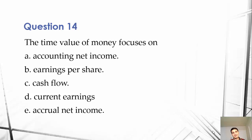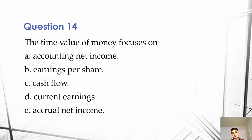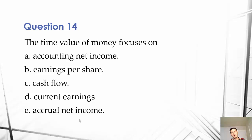When we are considering this, we are only concerned with cash flow. When we're talking about net income — the answers for this question include accounting net income for A, accrual net income for E, current earnings and earnings per share — those are all wrong. Cash flow is correct. All of these wrong answers are based off of accrual-based accounting, which is great for determining how a company is performing in a period, but when we're making decisions, we really care about cash flow.